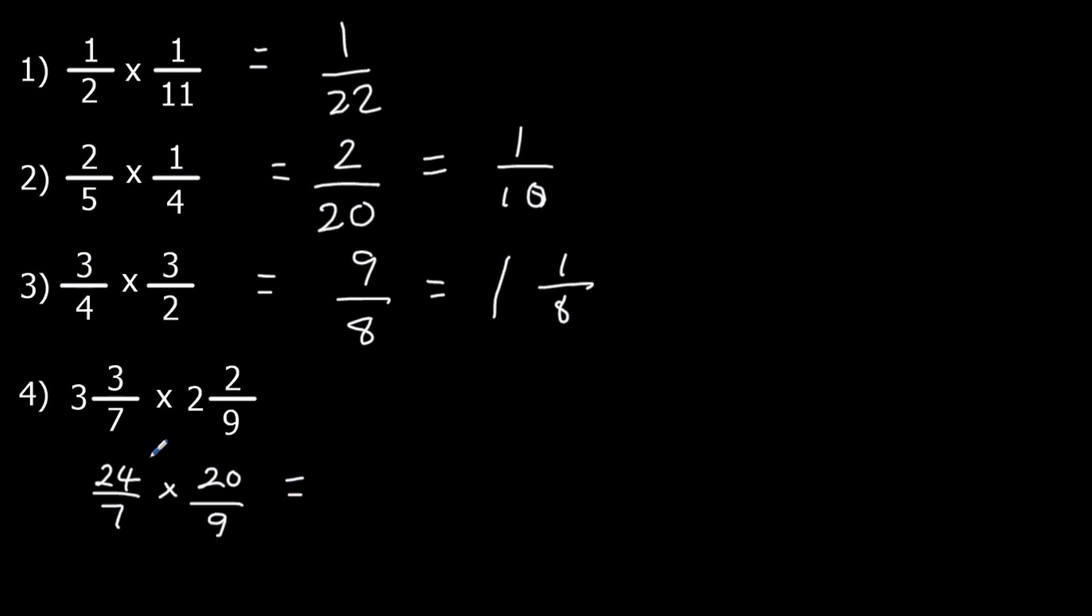Okay, so 24 times 20, well, 24 times 10 is 240. Double it for 80, over 63. That is going to simplify. They're both in the 3 times table. I know that because 4 and 8 add up to 12, which is in the 3 times table. And 6 and 3 add up to 9, which is also in the 3 times table. So that's a little trick. So we've got 480, which is 160 times 3, and 63, which is 21 times 3. I don't think that's going to simplify any further.